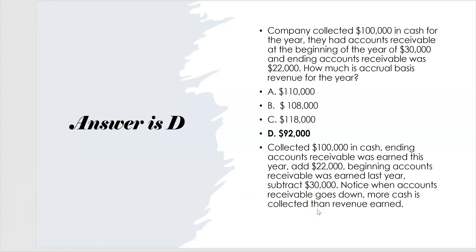That's a type of reconciliation from cash basis revenue to accrual basis revenue that a simulation would absolutely require you to know. They could also ask you this in a multiple choice question. Notice: when accounts receivable goes down — like it did from $30,000 at the beginning of the year to $22,000 at the end of the year — what happens to earned revenue? When receivables fall, earned revenue is less than cash collected. We collected $100,000, we only earned $92,000. That's because receivables fell — when receivables fall, that means you collected more than you earned for the year.